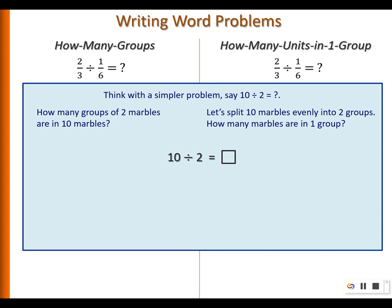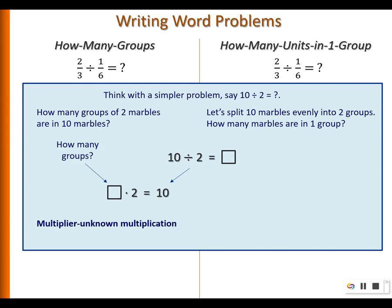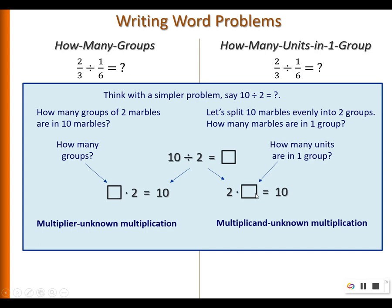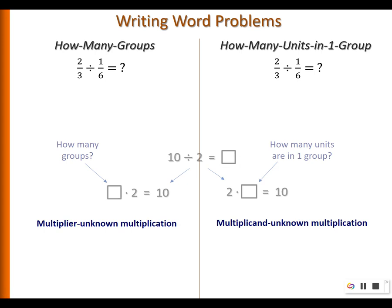It's always good to view a division as a multiplication. When we do 10 divided by 2, there are two types of division problems. One type is called the 'multiplier unknown' — we are figuring out how many groups of two marbles are in 10 marbles. The other type is the 'multiplicand unknown' — we want to find how many units are in one group given that there are two groups.